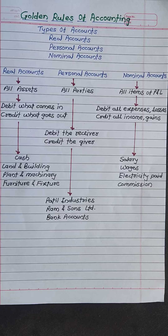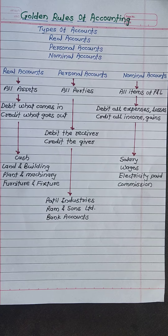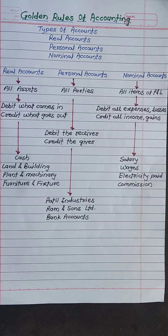The first one is Real Account. Real Account contains all assets. The rule of Real Account is: debit what comes in, credit what goes out.